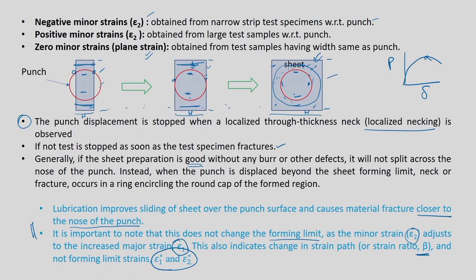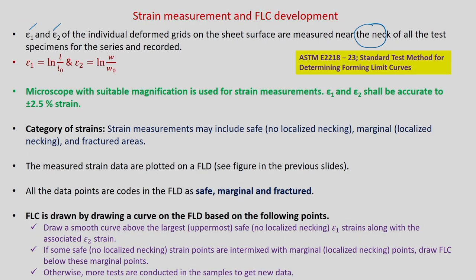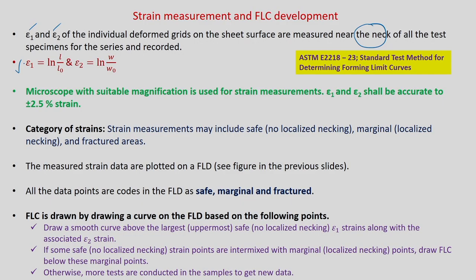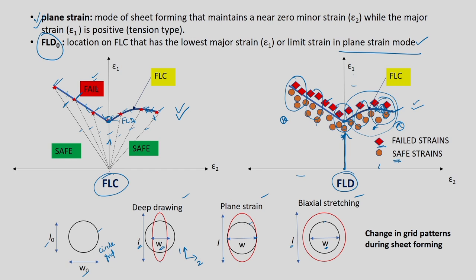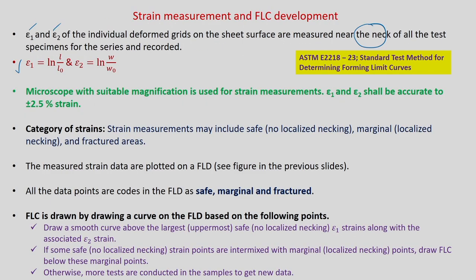For all 7 different widths — to get one forming limit curve for one material — you measure epsilon 1 and epsilon 2 near the neck in all 7 different strain paths. Epsilon 1 is calculated as ln(L/L₀) and epsilon 2 as ln(W/W₀). We have already done many problems on this and know how to calculate it.